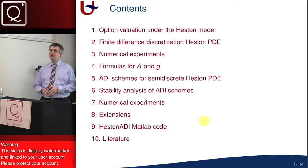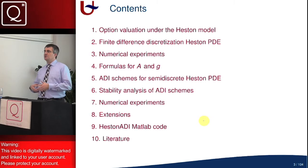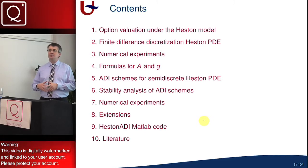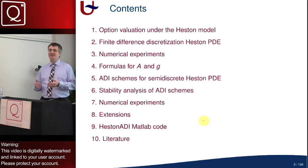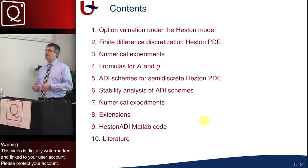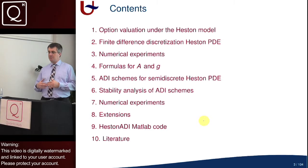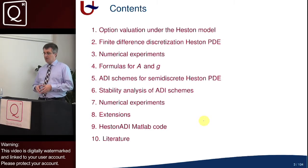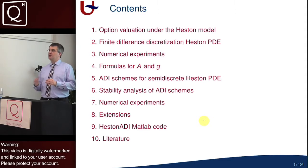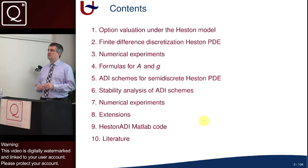The numerical solution approach that we follow consists of two steps. First, we are going to discretize in what we call space — that's a physical interpretation — and that means in the S and V variables in the Heston PDE. That will be the first step, and we will do that by finite differences. We will present in part three numerical experiments concerning this finite difference discretization and see the accuracy of that discretization.